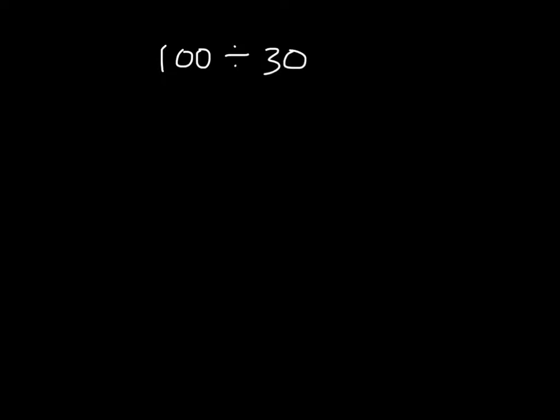What's the divisor? Right, it's 30. We need to think of multiples of 30 to make the division easy. How can we estimate the quotient, or the whole, or what we're dividing?